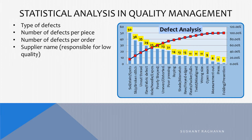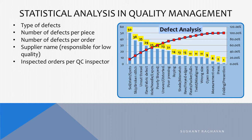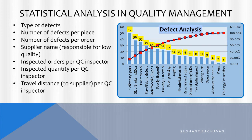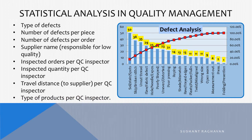You can also identify the supplier name responsible for low quality. Additionally, track inspected orders per QC inspector, inspected quantity per QC inspector, travel distance to supplier per QC inspector, and type of products per QC inspector.